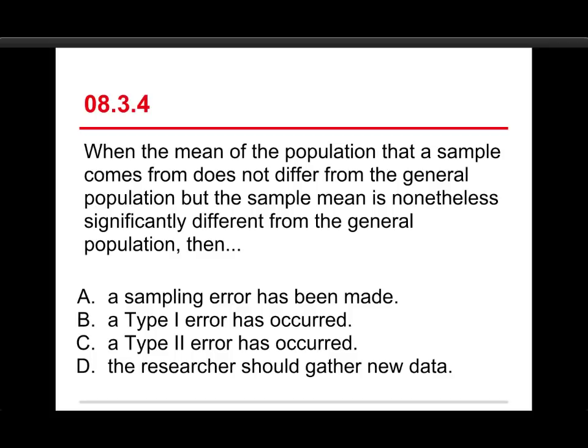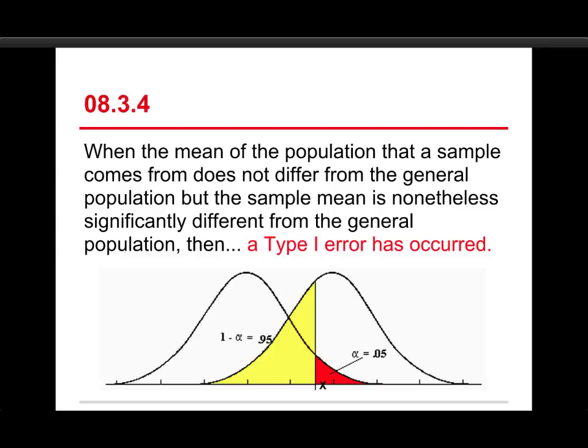Well, it's a long and confusing question, but it's representative of what you're going to get on the final, so you need to find a way to deal with these things. The answer in this case is B, a Type I error has occurred. Here's how it works. The mean of the population that a sample comes from does not differ from the general population. That means that the null hypothesis is true, but the sample mean is nonetheless significantly different from the general population, then a Type I error has occurred.